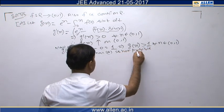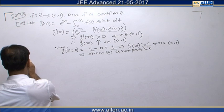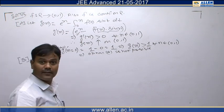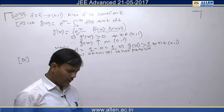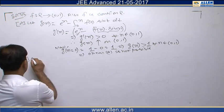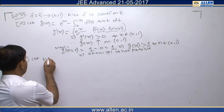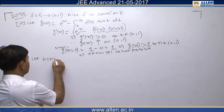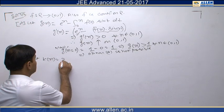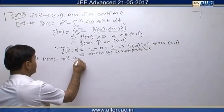Now we check option B. In option B, we consider a new function k(x) given by x^9 minus f(x).